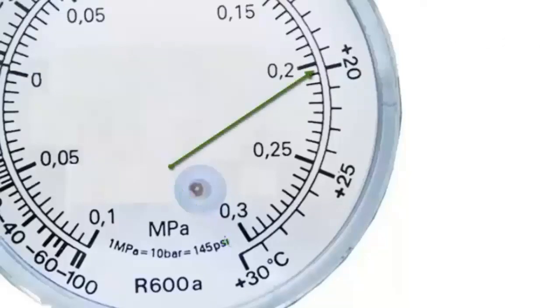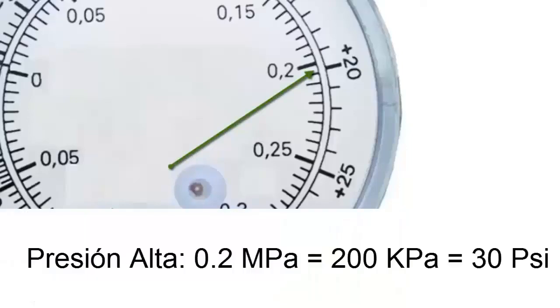If we want to know the pressure that the equipment should have being turned off, we are going to search the manometer for the value of the ambient temperature. That is, we place the needle at 20 degrees Celsius, and thus we can read the pressure value.